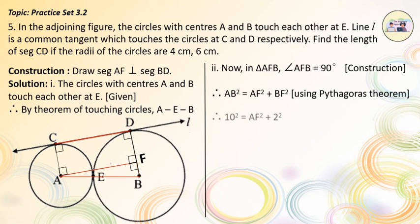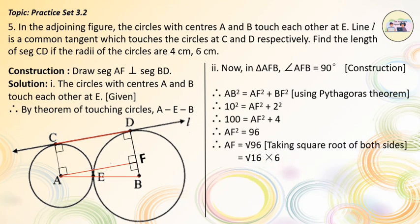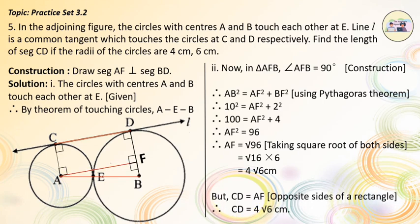Therefore, 10² = AF² + 2², so 100 = AF² + 4. Therefore, AF² = 96. Therefore, AF = √96 = 4√6 cm. Since CD = AF, we get CD = 4√6 cm.